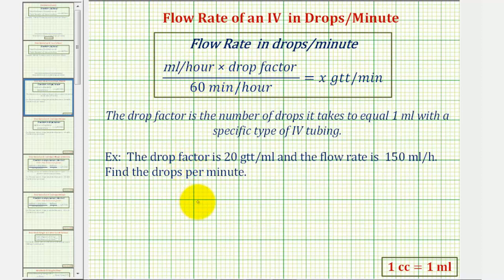If we start with milliliters per hour, which I'll write in fraction form, and multiply this by the drop factor, which is in drops per milliliter, and then we divide this product by minutes per hour. Notice how the units of hours simplifies out, as well as the units for milliliters, leaving us with drops per minute.